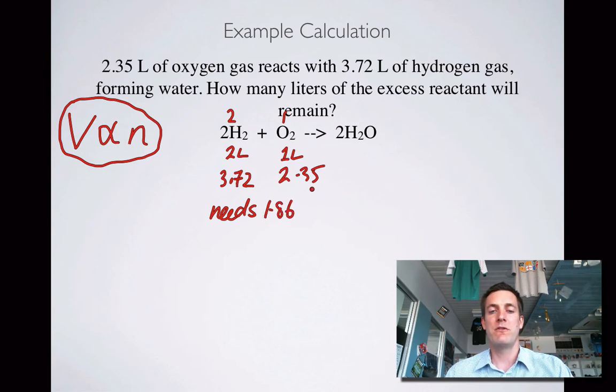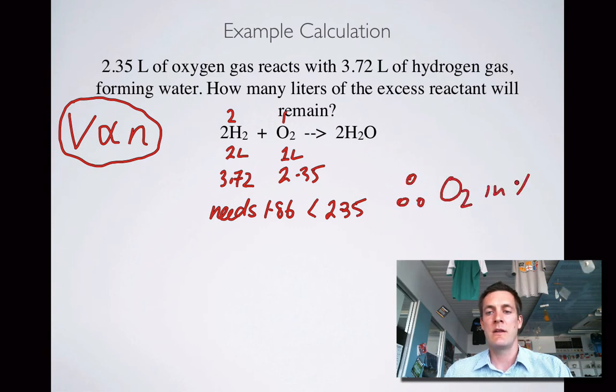So this needs 1.86 moles of oxygen, but there's 2.35, so that's less than 2.35. So in other words, the oxygen is in excess. Therefore, the oxygen is in excess, and that means that our hydrogen is the limiting reagent. How did we know this was a limiting reagent question? We weren't told the masses of two reactants, but we were told the volumes of two reactants, and we were told to find this.